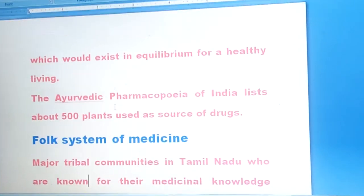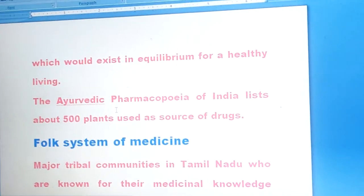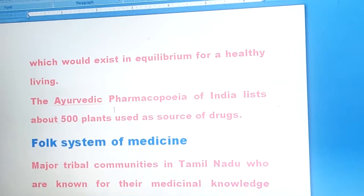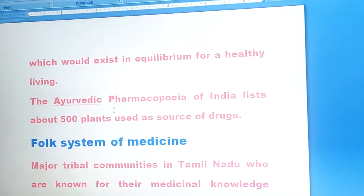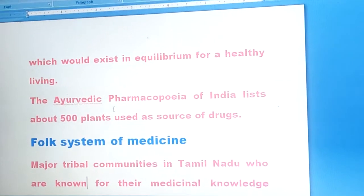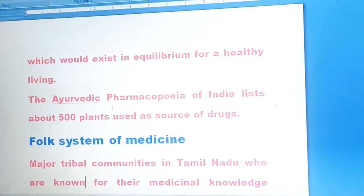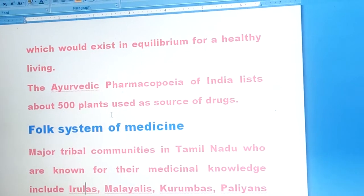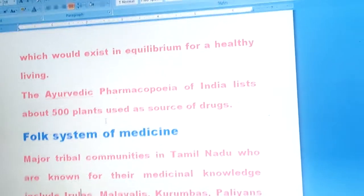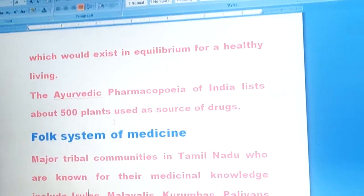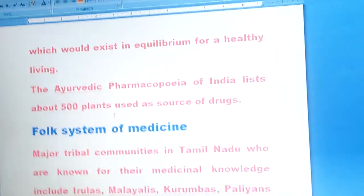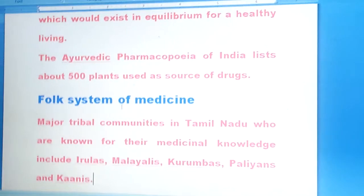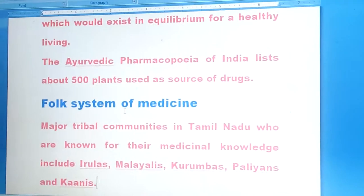Next we have folk systems of medicine. Major tribal communities in Tamil Nadu known for their medicinal knowledge include Irulas, Malayalis, Kurumbas, Polyans, and Conics.